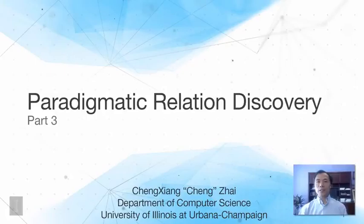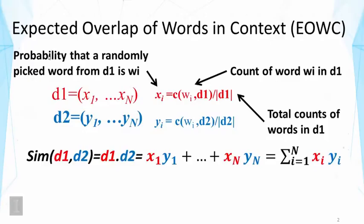In this lecture, we continue discussing paradigmatic relation discovery. Earlier, we introduced a method called expected overlap of words in context. In this method, we represent each context by a word vector that represents the probability of a word in the context.